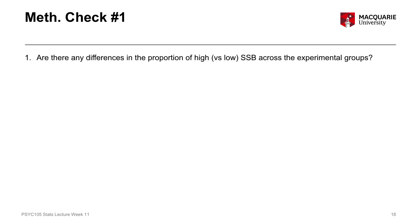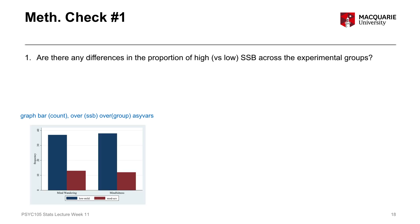For question one — are there any differences in the proportion of high versus low somatic symptom burden across our experimental groups? — the first thing we can do is get a clustered bar chart to describe our data visually. This chart shows low versus mild somatic symptom burden in blue bars and moderate-severe burden in red bars, comparing the mind-wandering control group on the left to the mindfulness group on the right. The proportion of blue versus red bars across both groups is really similar — almost identical — suggesting there will be no association between somatic symptom burden and experimental group, and that these two variables are likely independent.